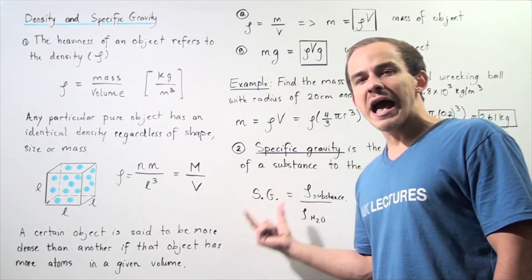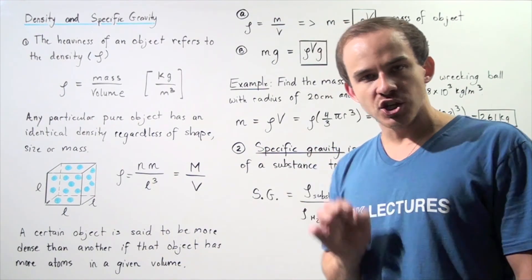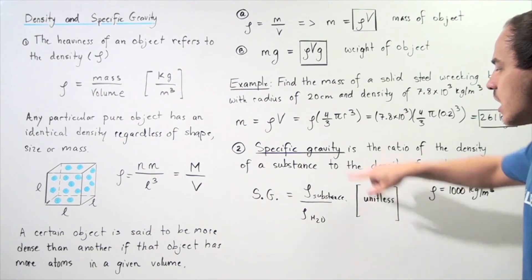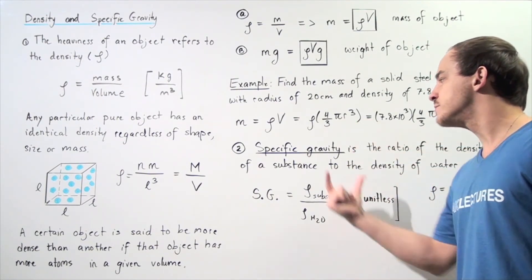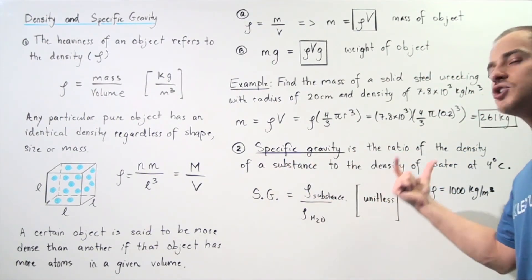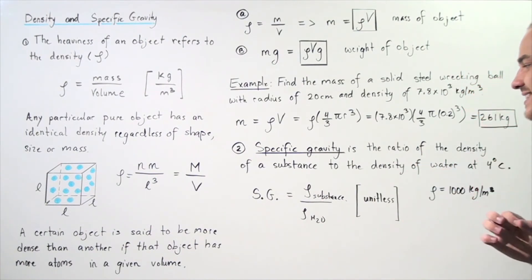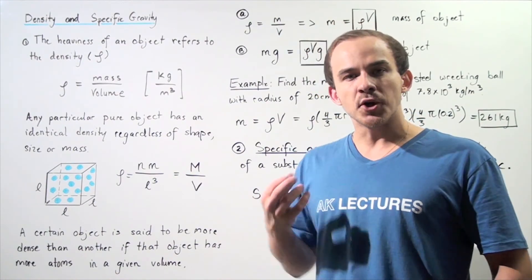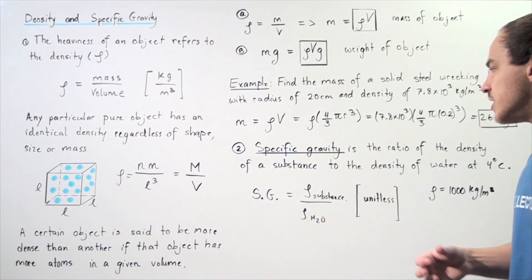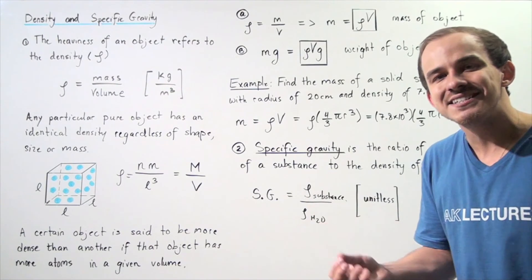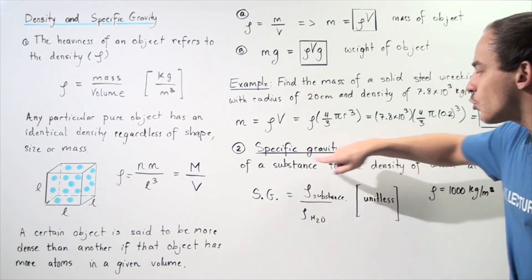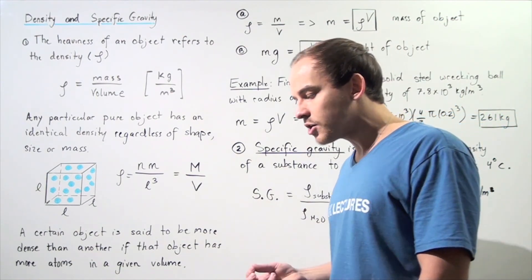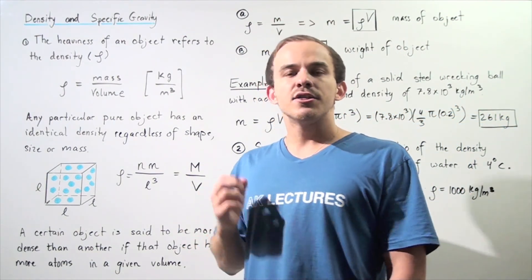Notice that specific gravity, because it's a ratio, has the same units over the same units. The units cancel, and specific gravity becomes unitless. For example, if we examine the specific gravity of mercury, mercury is approximately 13 times more dense than water, because the ratio of the density of mercury to the density of water is approximately 13.